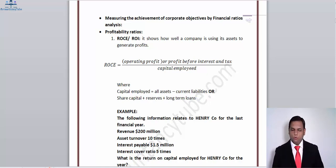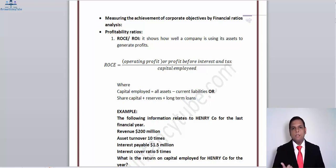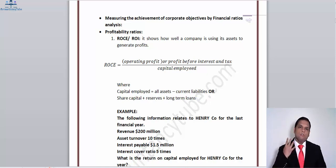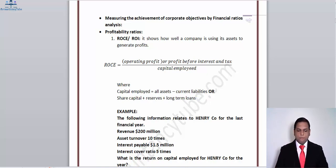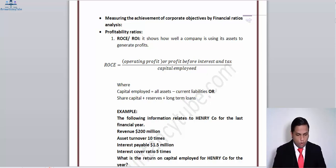Ratios are broadly classified into four categories: profitability, liquidity, gearing, and investors' ratios. Let's start with the profitability ratios. The best way to understand the ratios is through a financial statement extract — firstly let's see what the first profitability ratio is.